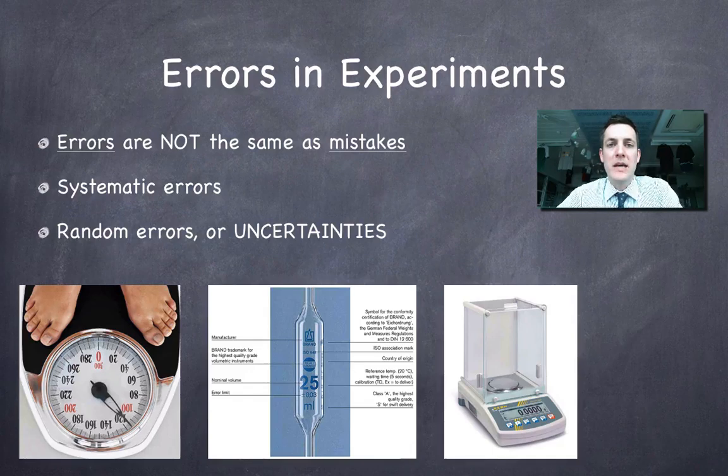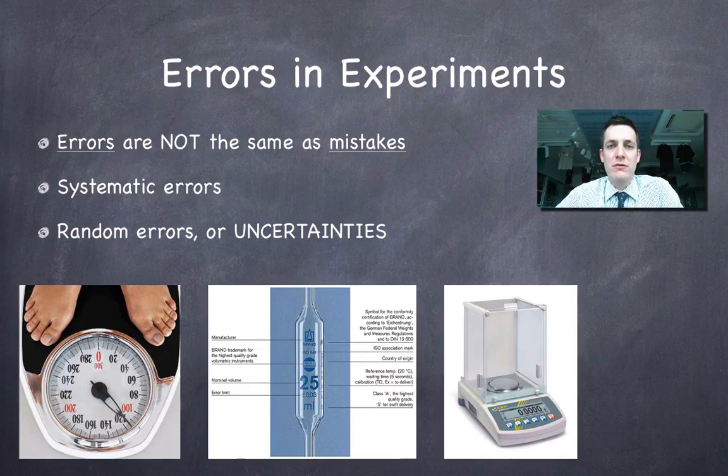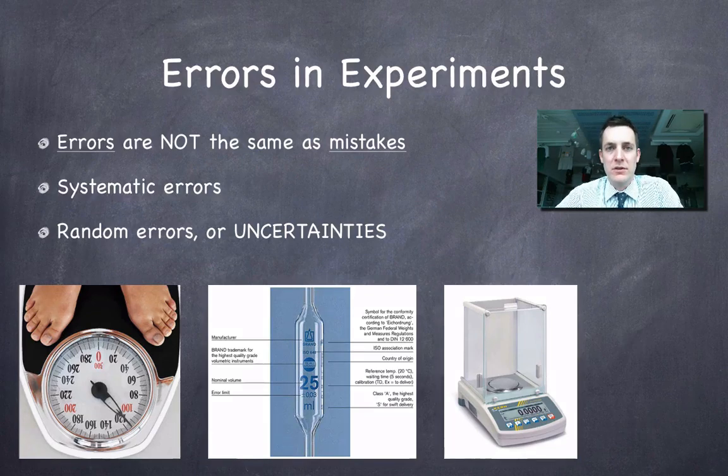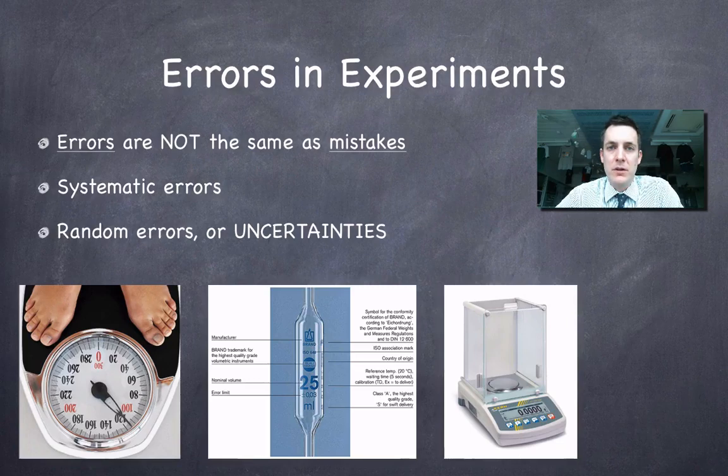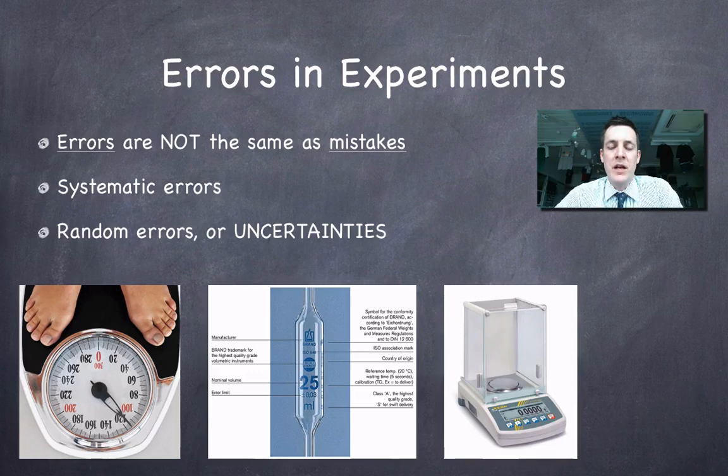We'll start off by looking at what we mean by errors in experiments, and it's important to realize that they're not the same thing as mistakes. So if I don't follow a method carefully, for example if I'm slow pressing start on my stopwatch when I'm trying to record how fast something's going, then I'm being careless. So I'm making mistakes in my experiment. I'm not introducing errors. There's a difference between mistakes which we can avoid if we're careful, and errors which we can't avoid no matter how carefully we do the experiment. So that's really important because when it comes to writing up experiments, you don't want to include mistakes when you're analyzing the errors that are present in your experiment.